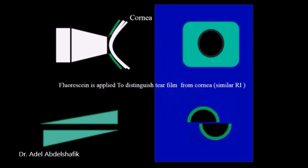Fluorescent stain is applied to distinguish the tear film from the cornea. When the cone touches the cornea, the area of touch will be devoid of fluorescent stain tears so it will appear black. When this area is seen through the tip of the applanation, the two prisms are going to shift each half of the circle into opposite directions.